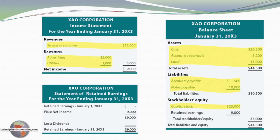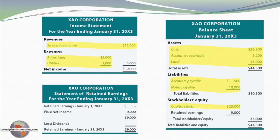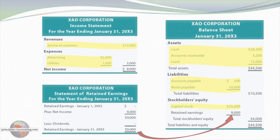Notice that revenues minus expenses gives us net income. Net income is not a trial balance amount — it's simply the amount that results by subtracting expenses from revenues. The net income appears in the income statement and is also carried down into the statement of retained earnings. Subtracting any dividends for the period — there were none in this particular case — gives us the ending retained earnings amount, which also appears in the balance sheet, causing the balance sheet to balance.